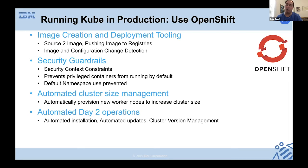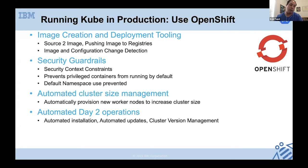Running in production you also need to worry about cluster size management — how many worker nodes you have and whether you can start new ones if needed. OpenShift gives you that capability, along with automated day-two operations: automated installation, automated updates, and ensuring the operating system version and Kubernetes version are aligned and work well together. As you go from learning about Kubernetes to getting serious about production, I highly recommend using something like OpenShift so you have fewer headaches and can focus on building your application.